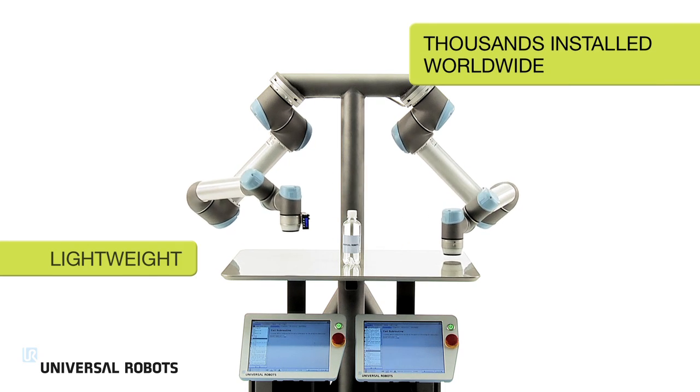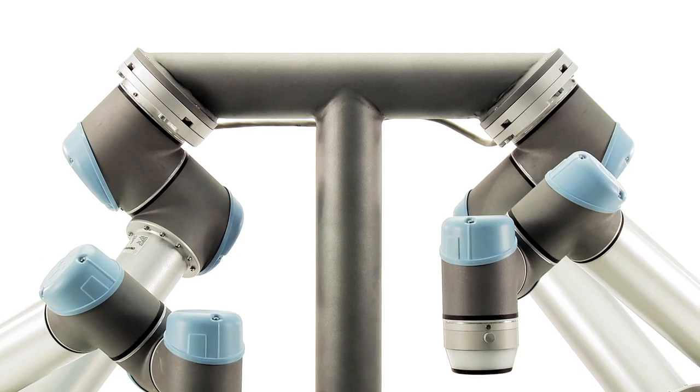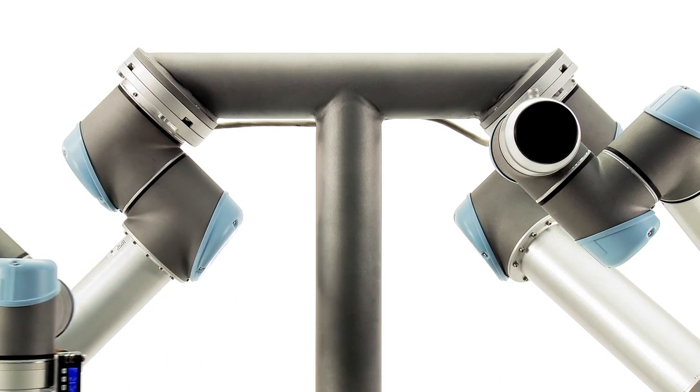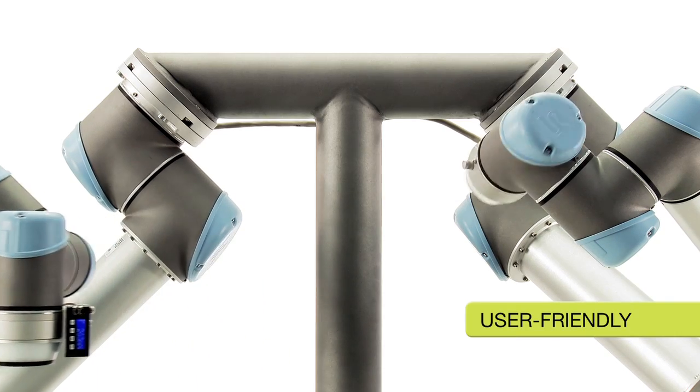Universal Robots has reinvented industrial robotics with lightweight, flexible robot arms. Tasks previously thought impossible to automate due to cost and complexity are now achievable with the user-friendly robots.